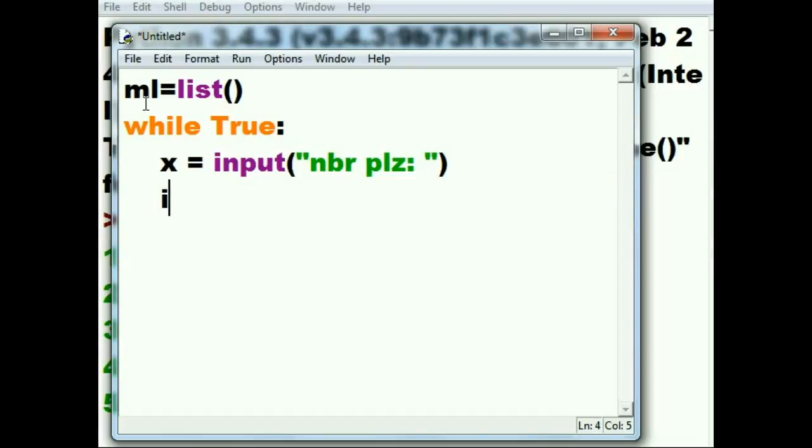Now if that input x is equal to, if the person keys in zero, then that'll signify the end. How do I do that? Input is going to take whatever number you key in, it's going to return it to x as a string though.